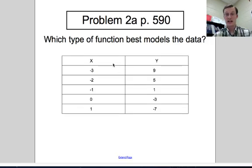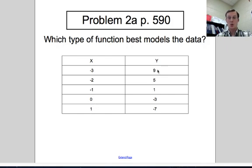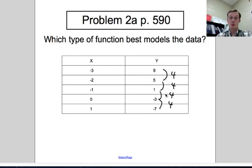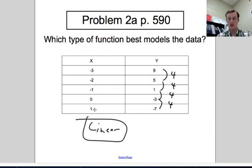Now let's look at a table. The x values are in order: −3, −2, −1, 0, 1. Looking at the y values and their differences: 9 − 5 = 4, 5 − 1 = 4, 1 − (−3) = 4, −3 − (−7) = 4. The first difference is constantly 4 — that means the slope is the same throughout. It is a constant rate of change, not turning, so this is linear.